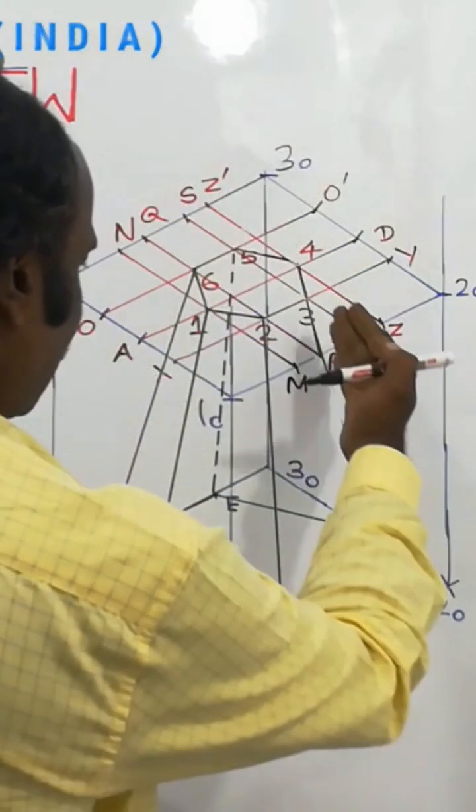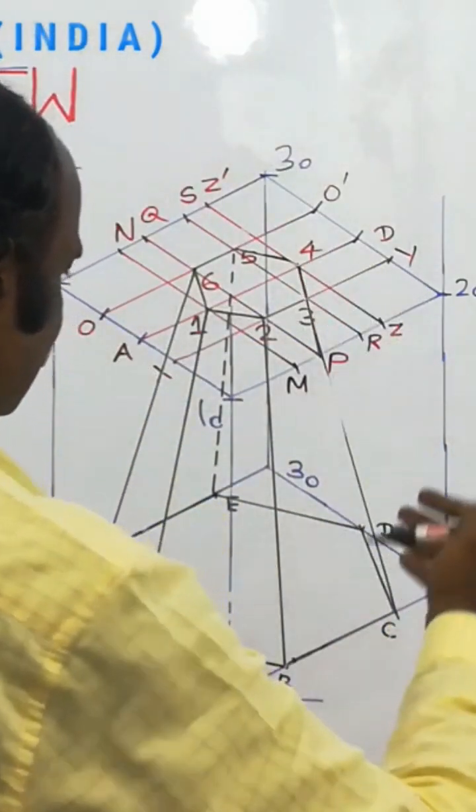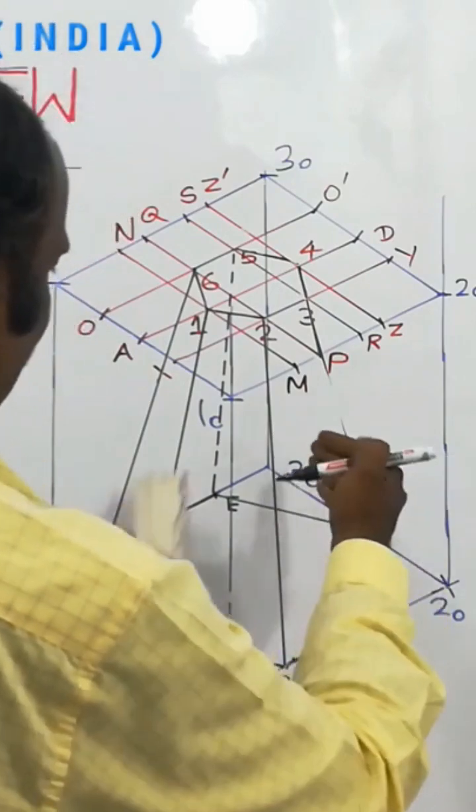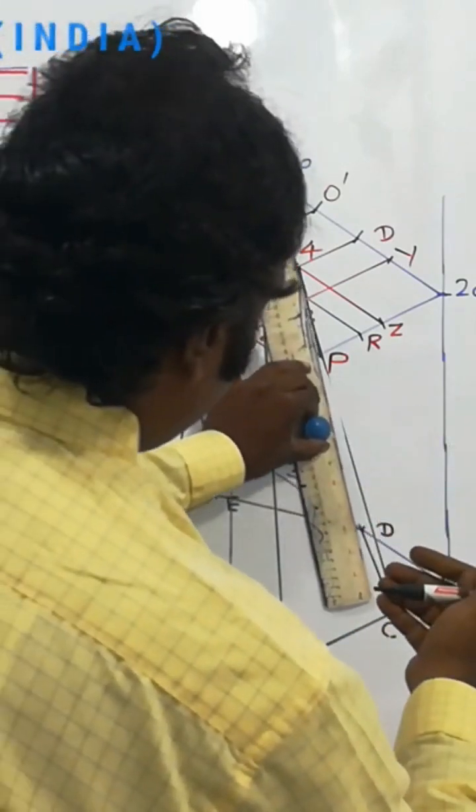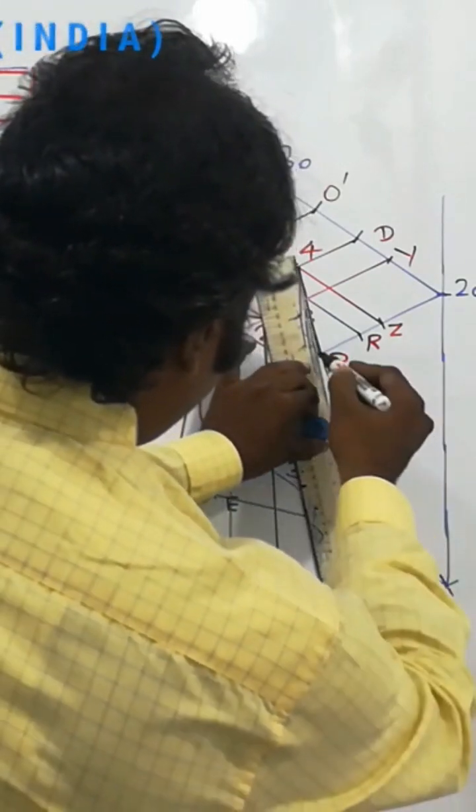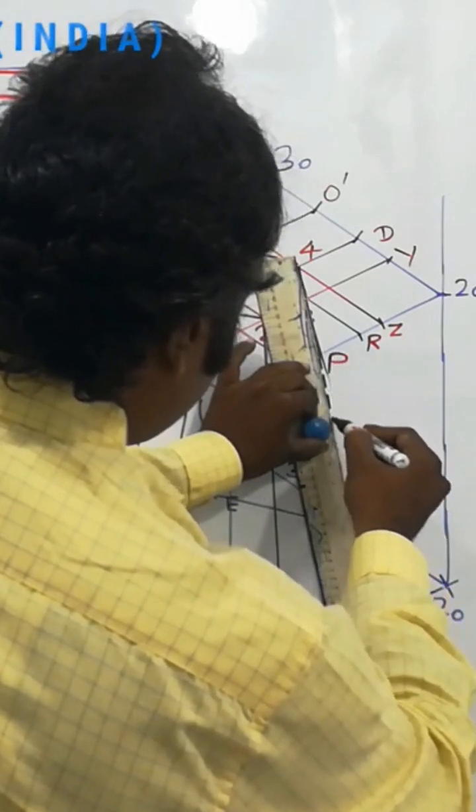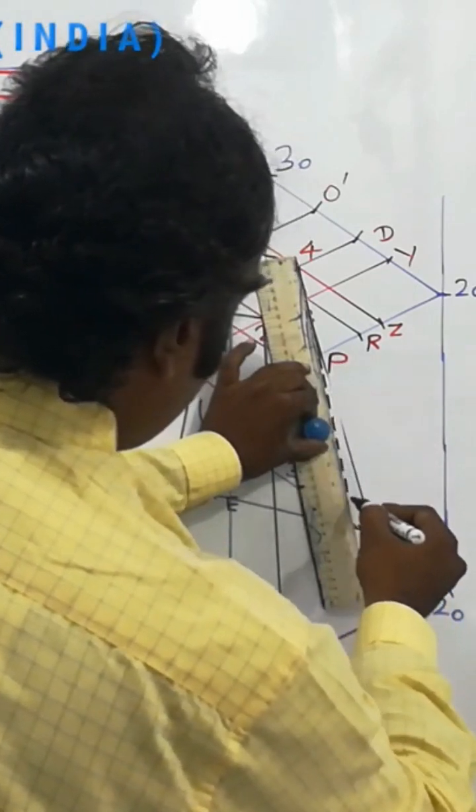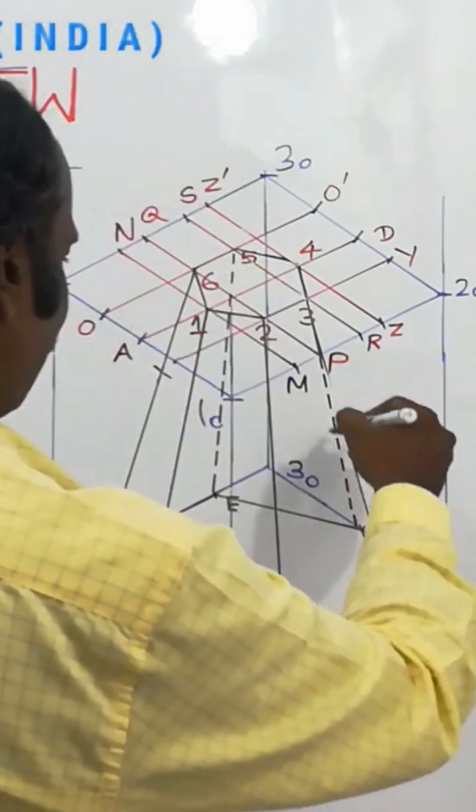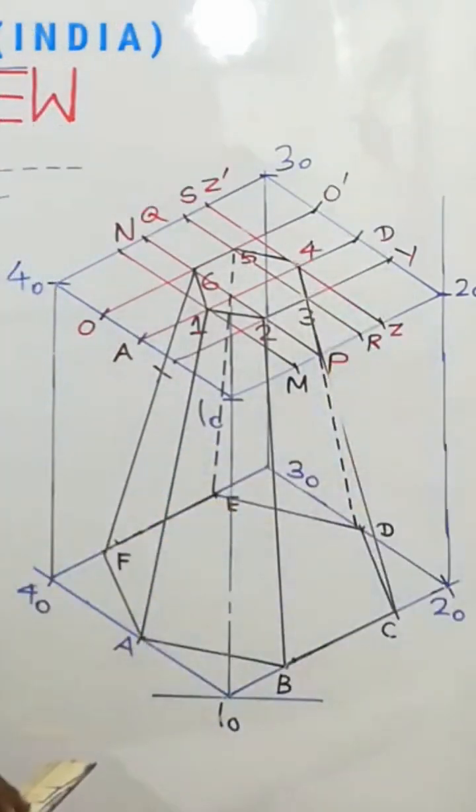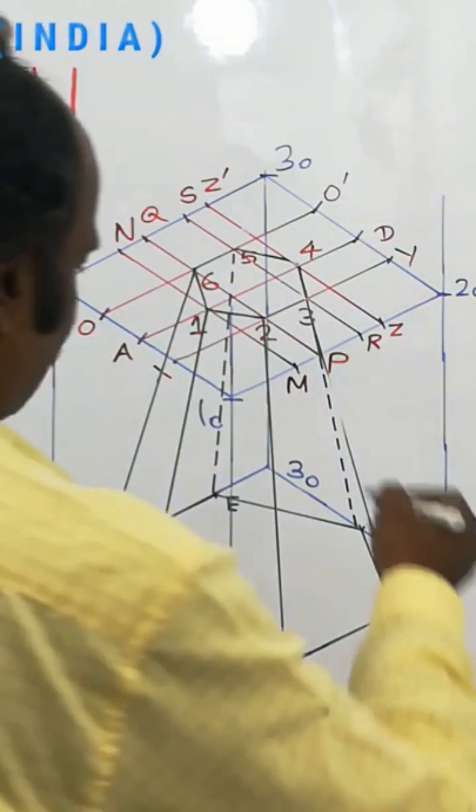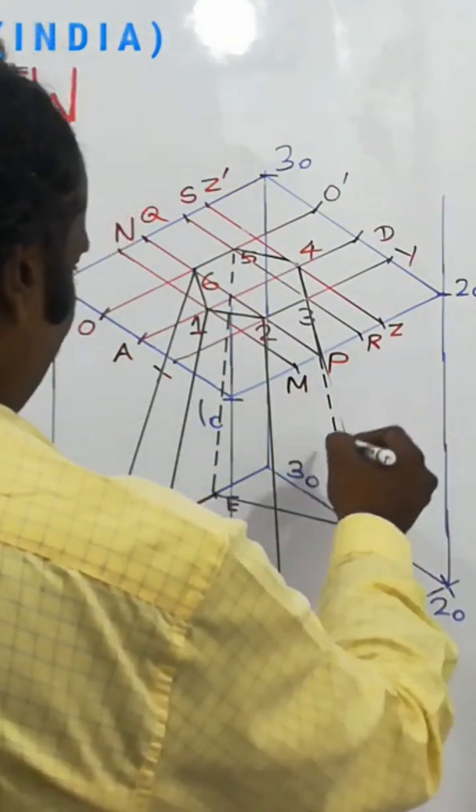Dashed line because outside edge 3c forms a backside slant edge called d4, indicated by dashed line like this. This line has to be drawn by continuous line edge. Suppose in the edge it has to be indicated.